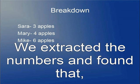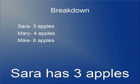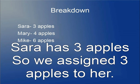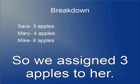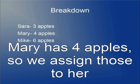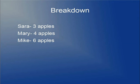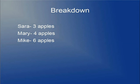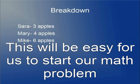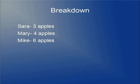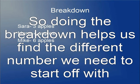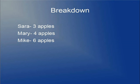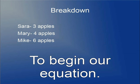Here is our breakdown. We extracted the numbers and found that Sarah has three apples, so we have three for her. Mary has four apples, so she is assigned four apples. And Mike has six apples, so he is assigned six in our breakdown list. This will make it easy to begin our math problem. Doing the breakdown helps us find the different numbers we need to start our equations.